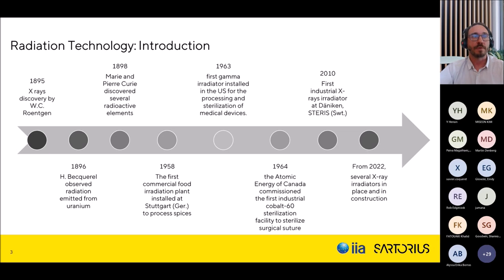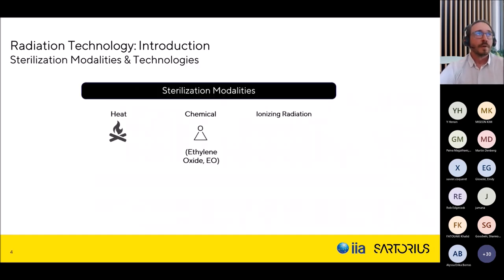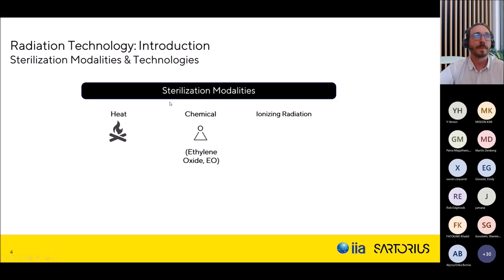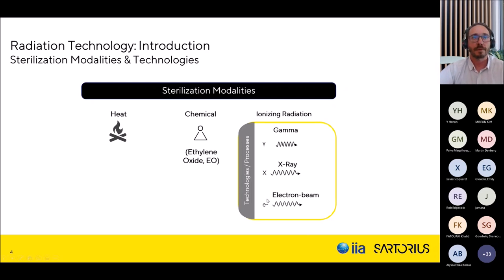From 2022, several X-ray plants have opened worldwide, especially in Europe. That means roughly 60 years between discovery and application for gamma, and more than a century for X-ray — but both are now quite mature technologies. On semantics: when we talk about sterilization modalities, we mean heat sterilization, chemical sterilization such as ethylene oxide (EO), and ionizing radiation. This webinar focuses specifically on the technologies using ionizing radiation.